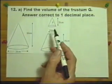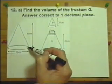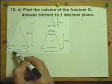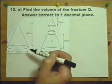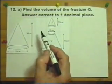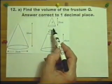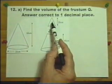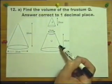It says the diagram shows a large cone with a base diameter of 30 and a height of 60. The large cone is cut to produce a smaller cone called P and a frustum.